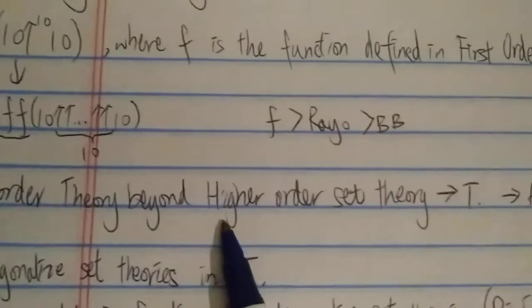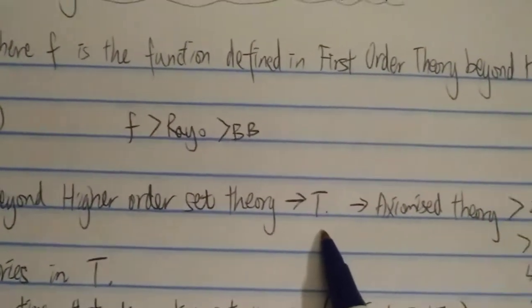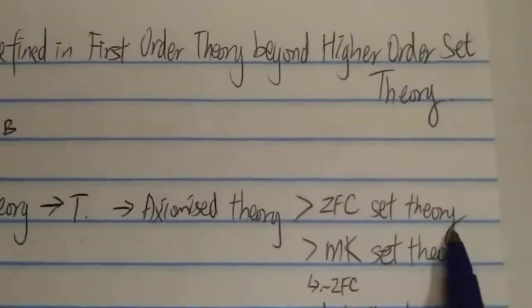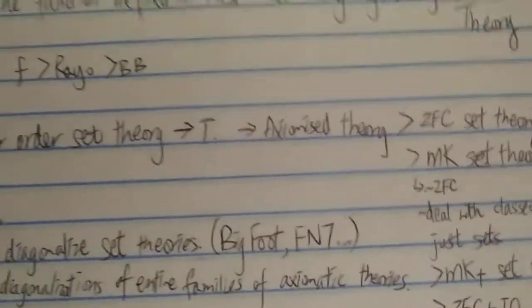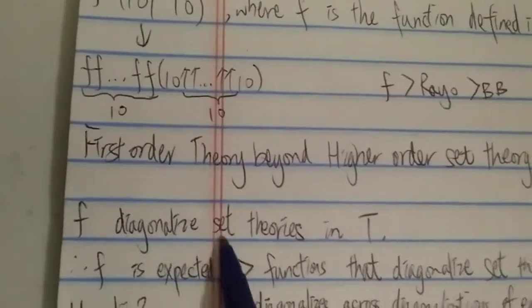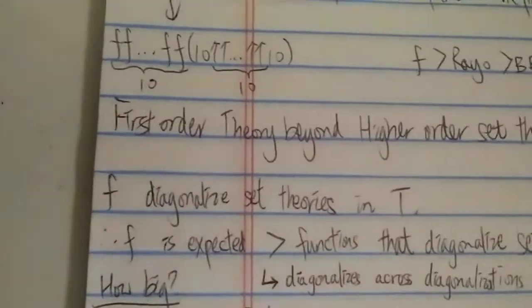So basically, what is the first order theory beyond the higher order set theory? So here, I think it's represented by the letter t. It's basically axiomized theory that is much, much, much stronger than the CFC set theory and some other strong theories.